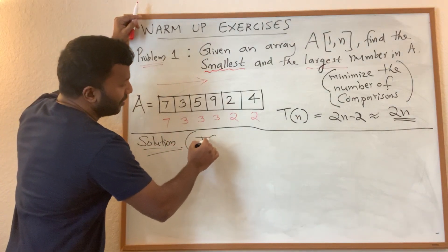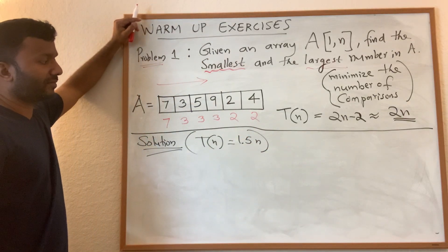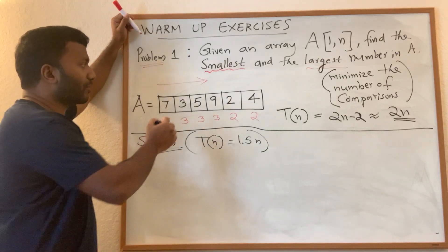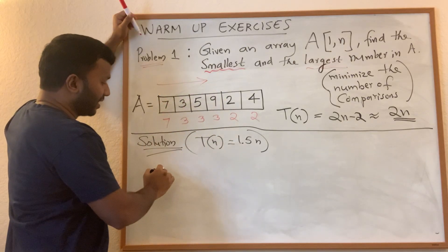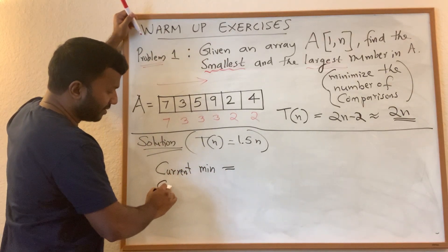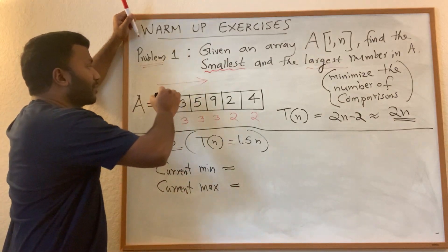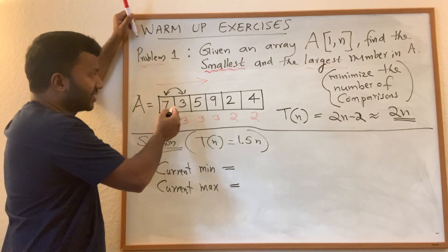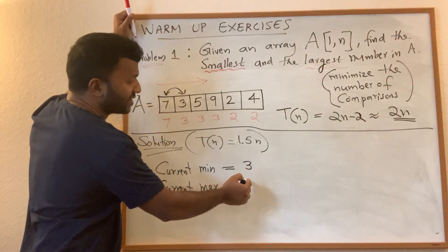The improved solution achieves T(n) = 1.5n. The idea is simple: take numbers in pairs. I maintain a current minimum variable and a current maximum variable. In the first step, compare the first two numbers — three and seven — pick the smallest, three, and initialize current minimum to three, and current maximum to seven.